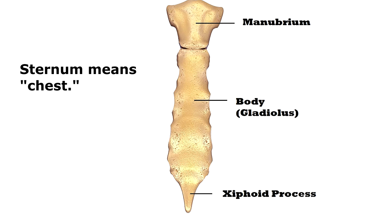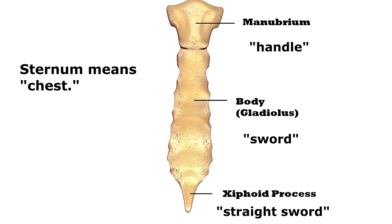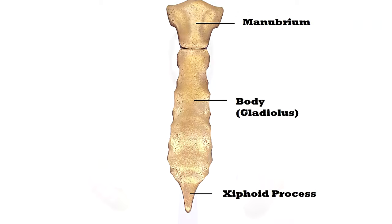The parts of the sternum are named after ancient words that refer to parts of a sword. The manubrium comes from a word that means handle. The gladiolus, which is the body, comes from a word that means sword. And xiphoid comes from an ancient word that means straight sword. I think this bone looks more like a necktie than a sword, but that's just me.